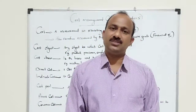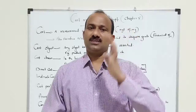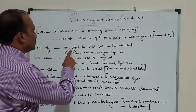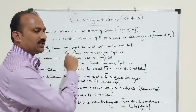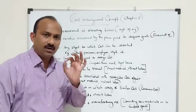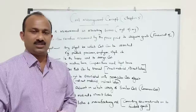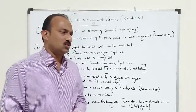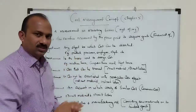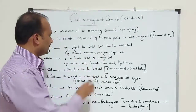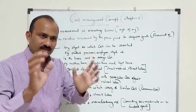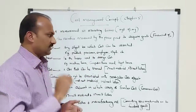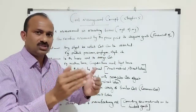The first point is Cost Object. Cost Object means any object to which cost can be attached. Any object you are attaching a cost to is known as a cost object. Examples include a product, a process, an employee, or a department — each has a cost attached to it.